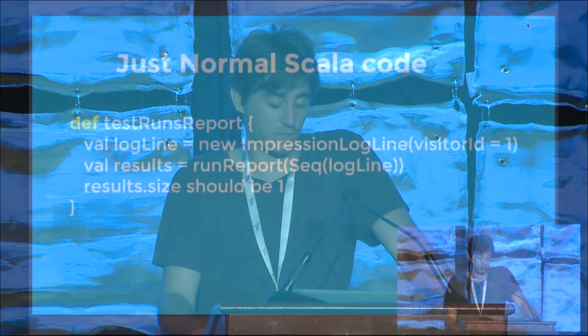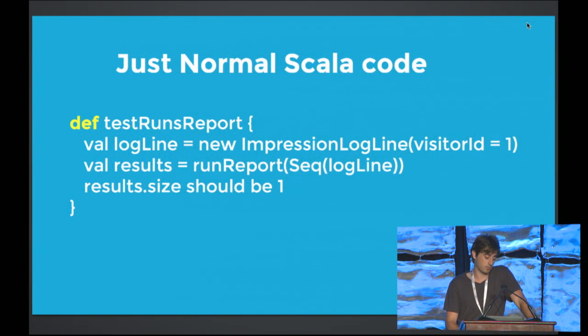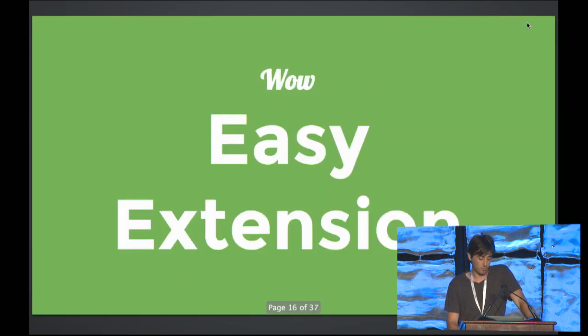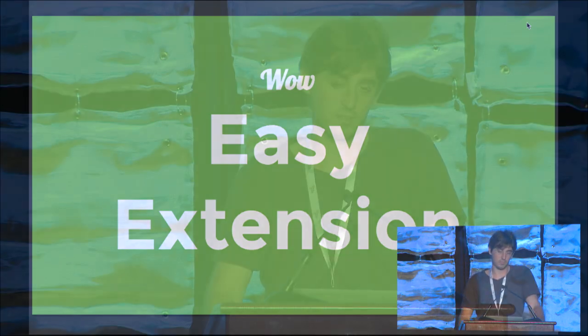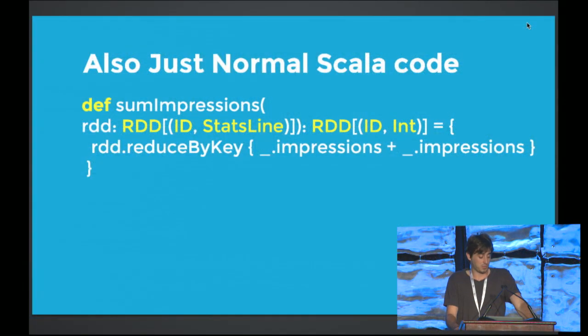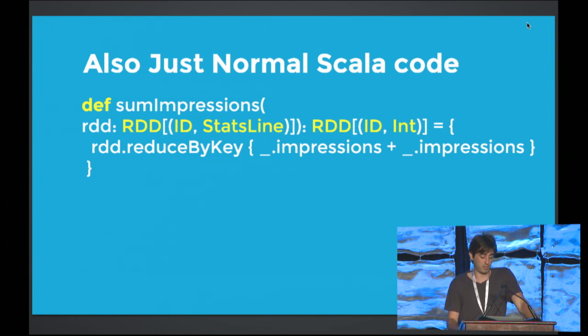The first thing we realized was that unit testing was now really nice — you could just write a normal Scala test, just like anything else, and it worked. That was a big win. The other thing was it was now easy to extend things too. You just write normal Scala code. If you want to write an abstraction method, you take in an RDD — which is Spark's normal distributed collection object — do some data processing on it, and return an RDD back out.